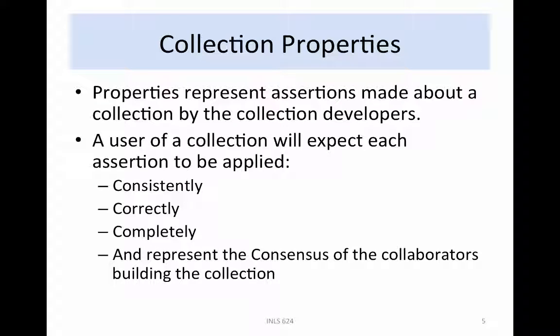Each desired collection property represents an assertion that is being made about the collection. The collection property is represented by metadata attributes that are saved for each file. An equivalent assertion is that each file will have appropriately updated metadata attributes. The user of the collection will expect that the attributes were consistently created across all files, that the correct version of the attribute has been created, that there are no missing values, and that the properties will have been created for files deposited by all collection collaborators, thus representing a consensus.